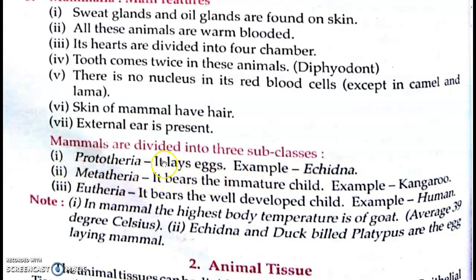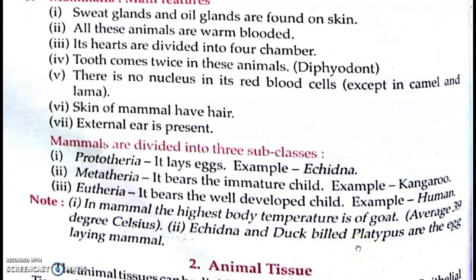Mammals are divided into three subclasses: Prototheria — it lays eggs; example echidna. Metatheria — it bears immature child; example kangaroo — aage baby hota hai jo immature hota hai aur baad mein bahar aata hai. Eutheria — it bears well-developed child; example human. In mammals, the highest body temperature is of goat — average 39 degree Celsius. Echidna and duck-billed platypus are egg-laying mammals. Thank you very much.